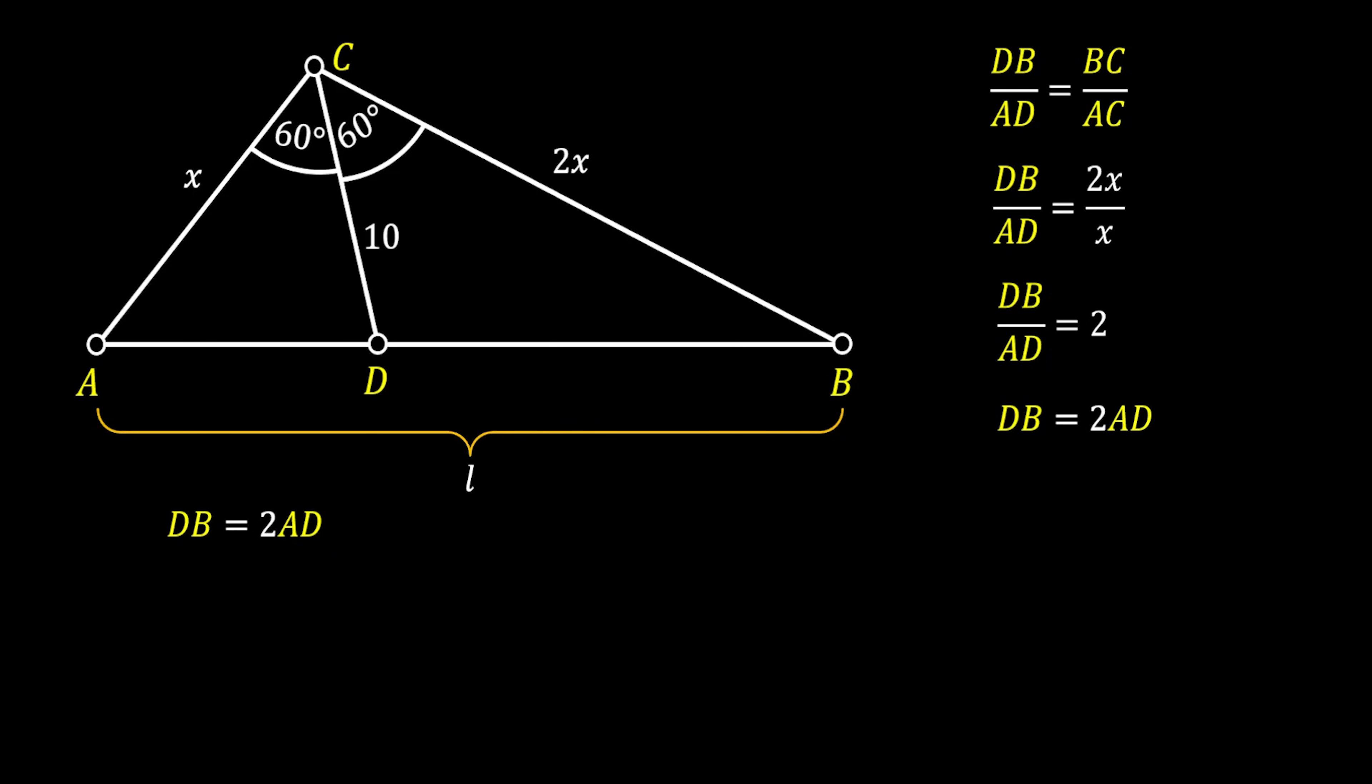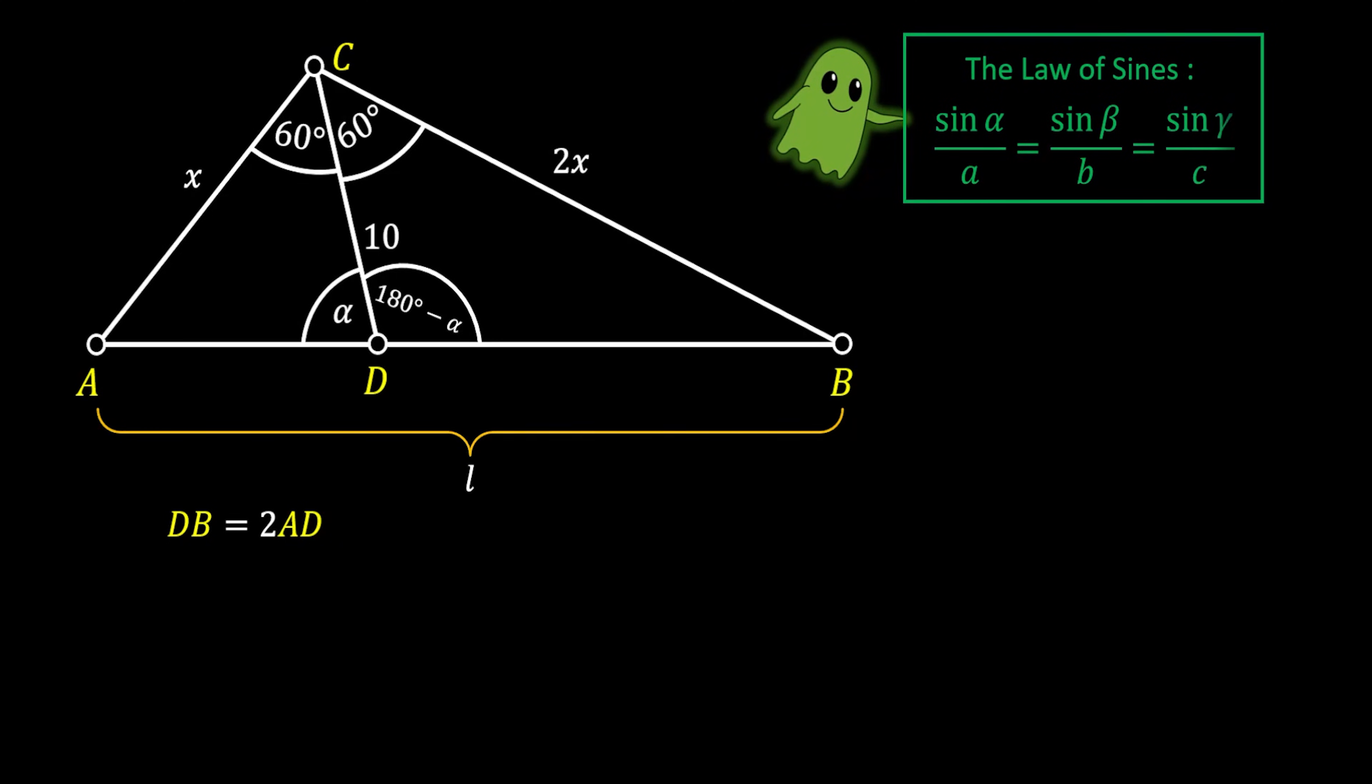Now, if you are not familiar with this angle bisector theorem, you can actually use the law of sines, and I'm going to show you this way as well. First, let's label the acute angle at the point D as alpha. This means that the other side of this angle must be 180 degrees minus alpha, since those two angles are supplementary. The law of sines states that the relation between the sine of an angle and the opposite side of the triangle is equal for the whole triangle.